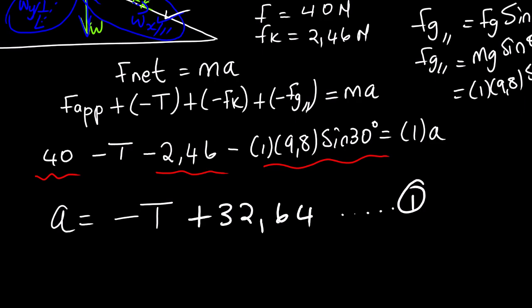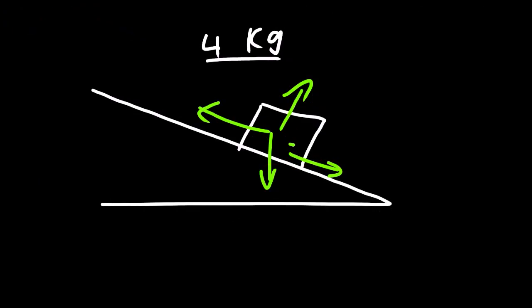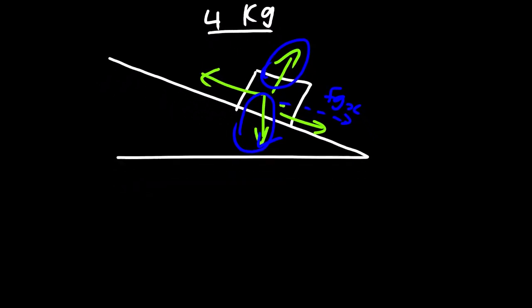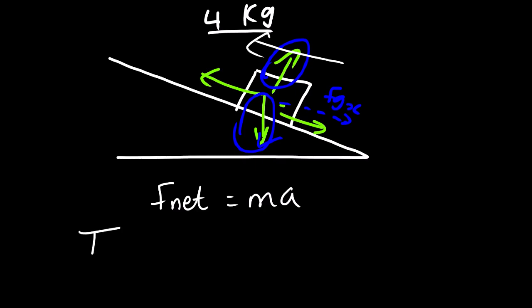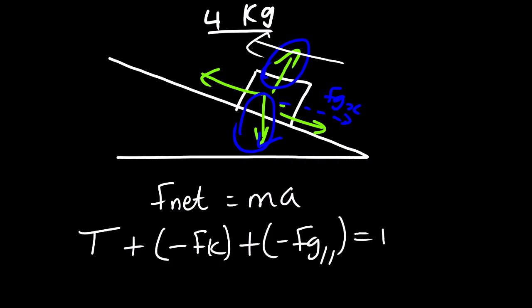We are done with the first equation from the 1 kg block. Now we move to the 4 kg block. For the 4 kg block we have similar forces. We cannot consider normal force or weight directly, but we consider the component Fg parallel, which is Fg sin θ. Our equation is: F_net = ma, with forces in the positive direction. We have tension, plus negative Fk, plus negative Fg parallel, equals ma.